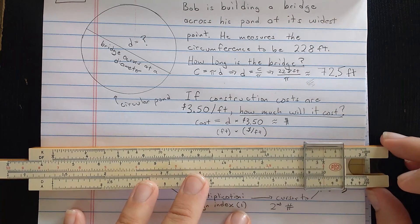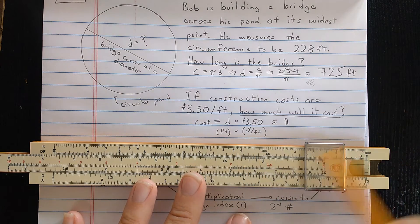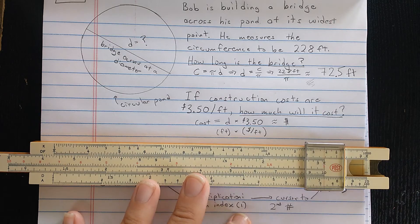So the question here is, how do you multiply on the slide rule? Because I want to take my previous result, the 72.5 feet, and multiply by the cost per foot.